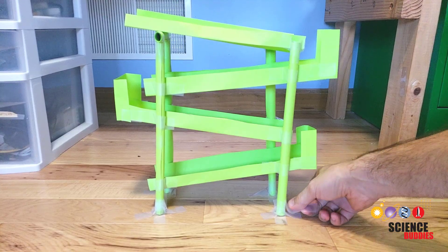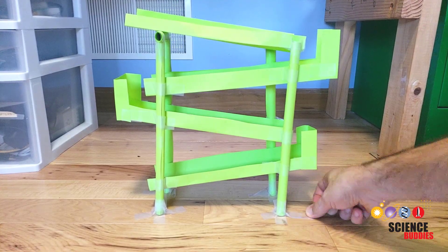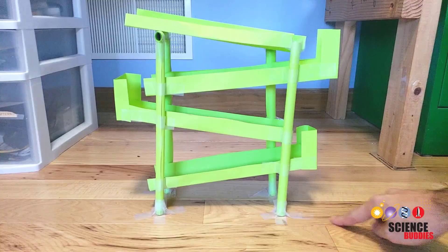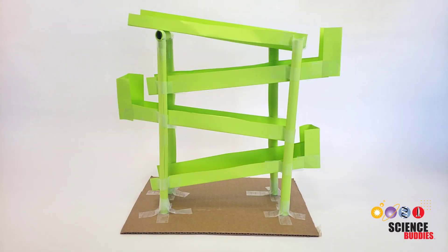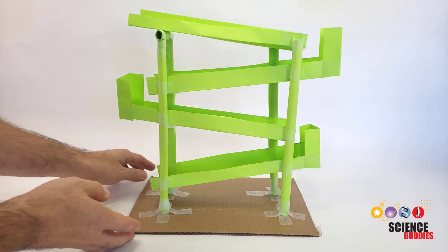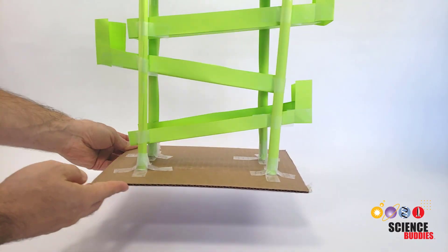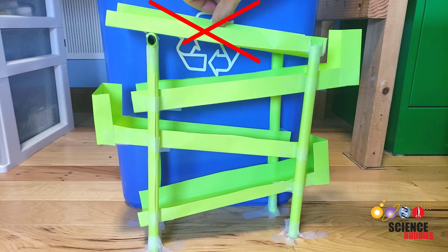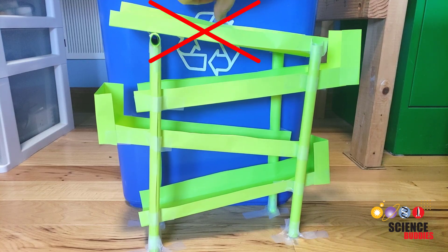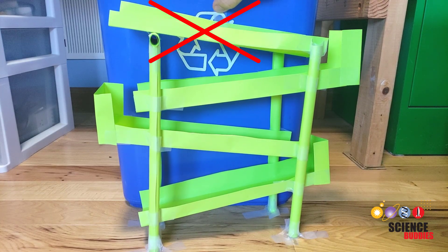Your ball run can be taped to the floor or another horizontal surface like a table or desk for support. If you would like your ball run to be portable, especially if you are working in a classroom environment, you can use a large flat piece of cardboard as a base. You cannot attach your ball run to anything else for support, for example, a piece of furniture, a wall, or a trash can.